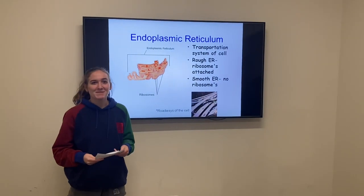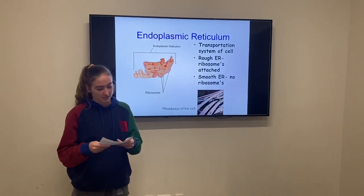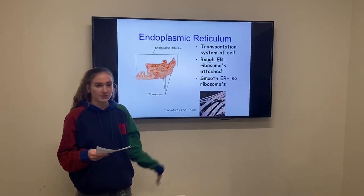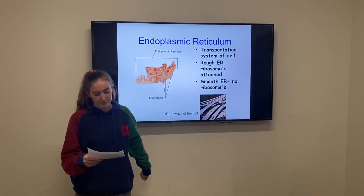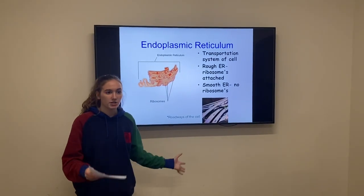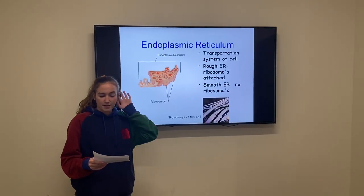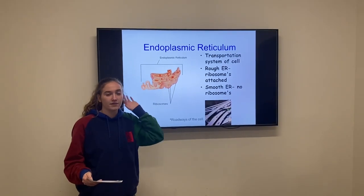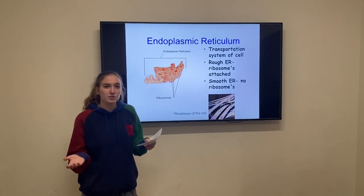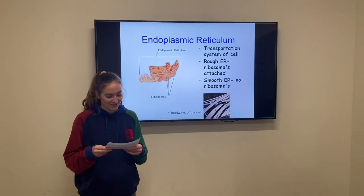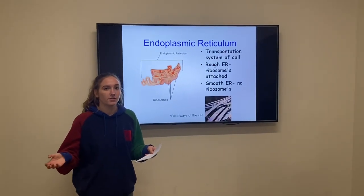The endoplasmic reticulum is connected to the nucleus and can come in different shapes and sizes depending on the cell and where it is located. There are two main types. The smooth endoplasmic reticulum acts like a package that holds information and DNA from the nucleus and stores it until the cell needs it again. The rough ER has ribosomes on it and acts like packages from Amazon or UPS — holding information that the nucleus gives out until it's needed again.